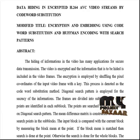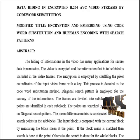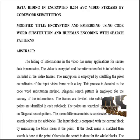The video is encrypted and the information to be hidden is included in the video frames. The encryption process is applied by shuffling the pixel coordinates of the input video frames based on a key. This process is denoted as the codeword substitution model. Diagonal search patterns are employed for the secrecy of the information. The frames are divided into sub-blocks and the search patterns are identified in each sub-block. Points are detected in the videos based on the diagonal search patterns model.